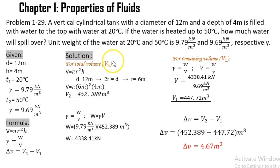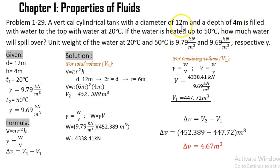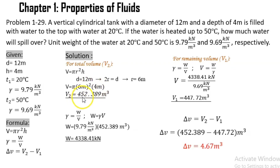First, we are going to solve for the total volume by using the formula for the volume of a cylinder, which is πr²h. In our problem, the diameter of the vertical cylindrical tank is 12 meters and its height is 4 meters. We convert the diameter to radius by dividing by 2, which equals 6 meters. Substituting our given values, V = π × (6m)² × 4m, which equals 452.389 meter cube.